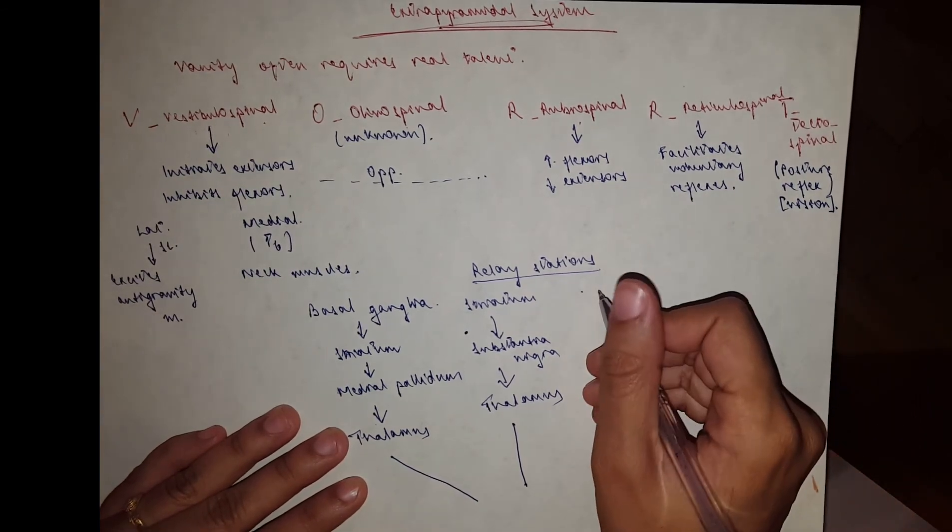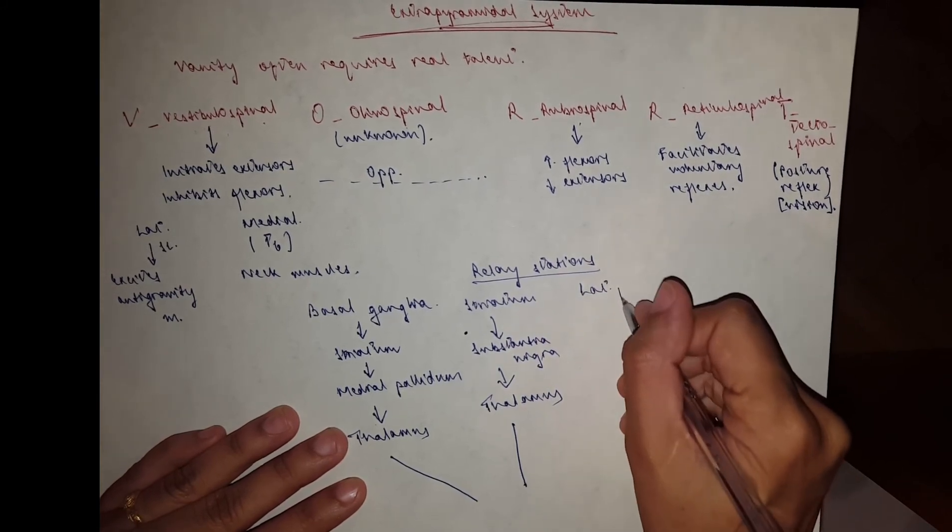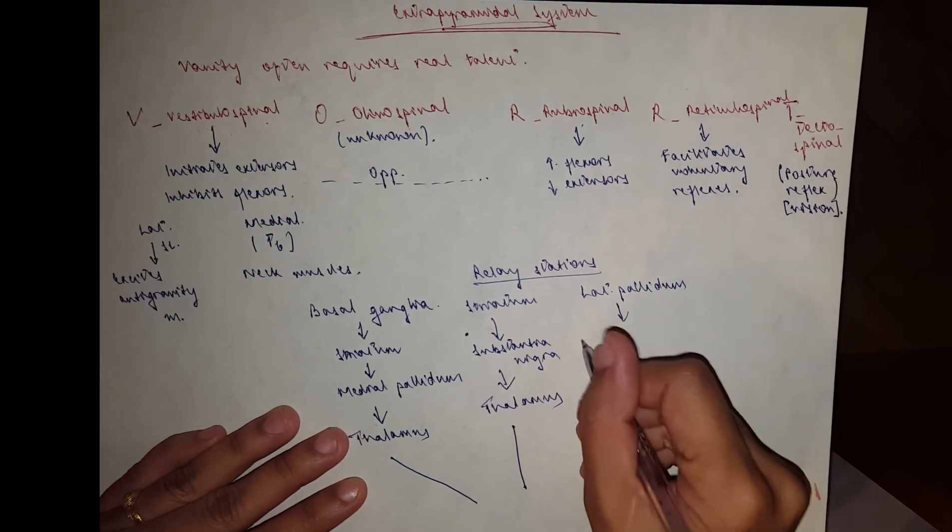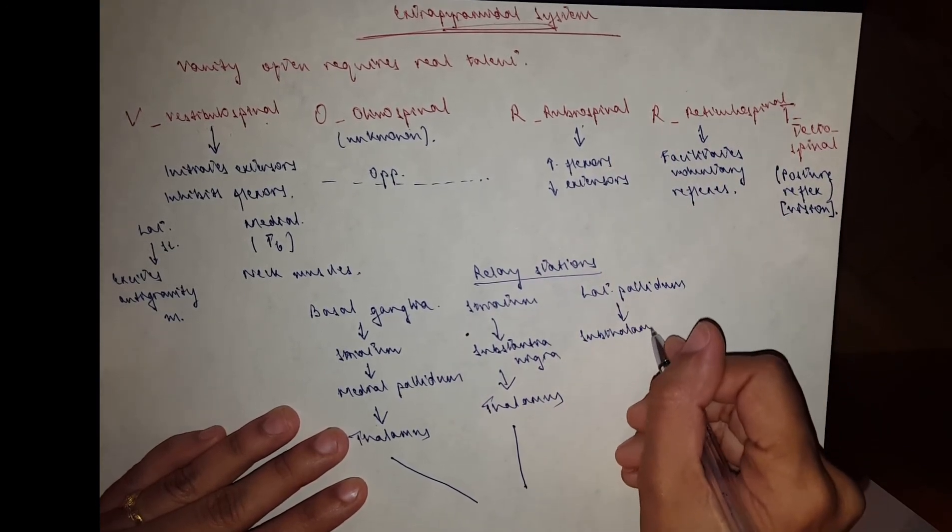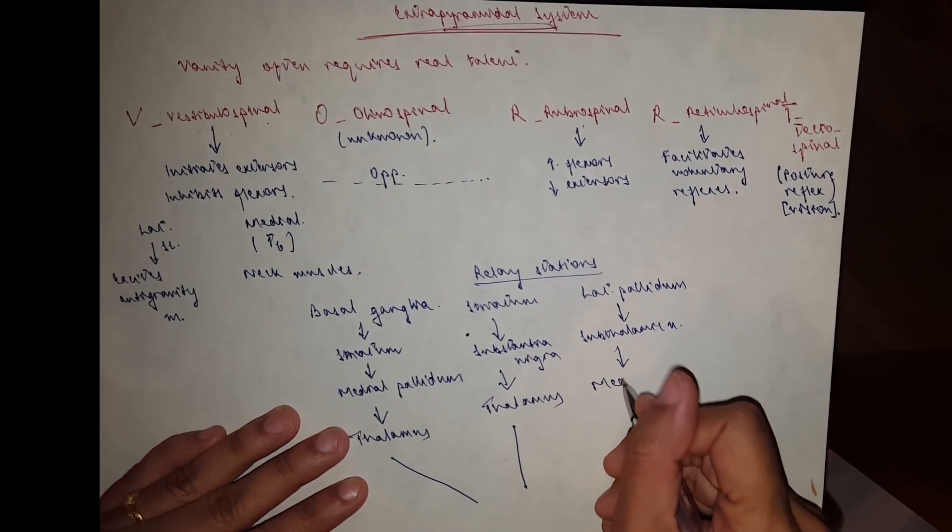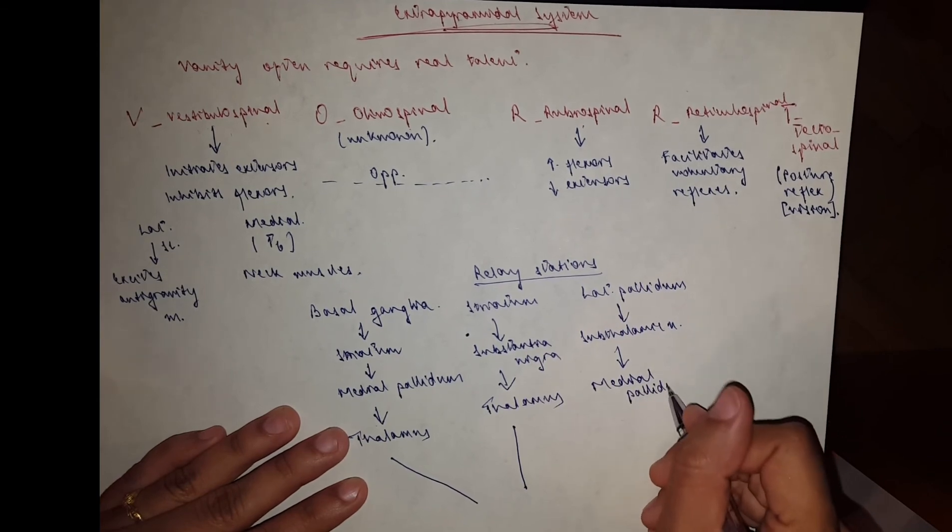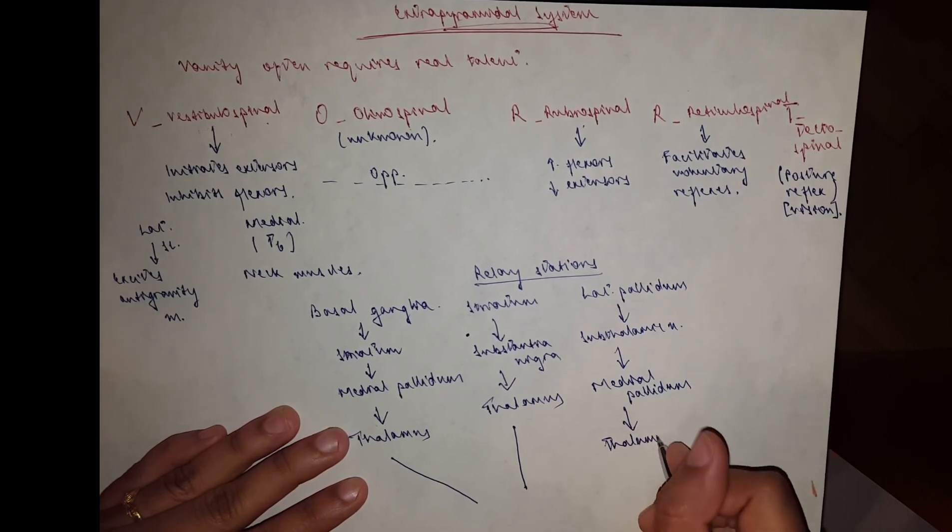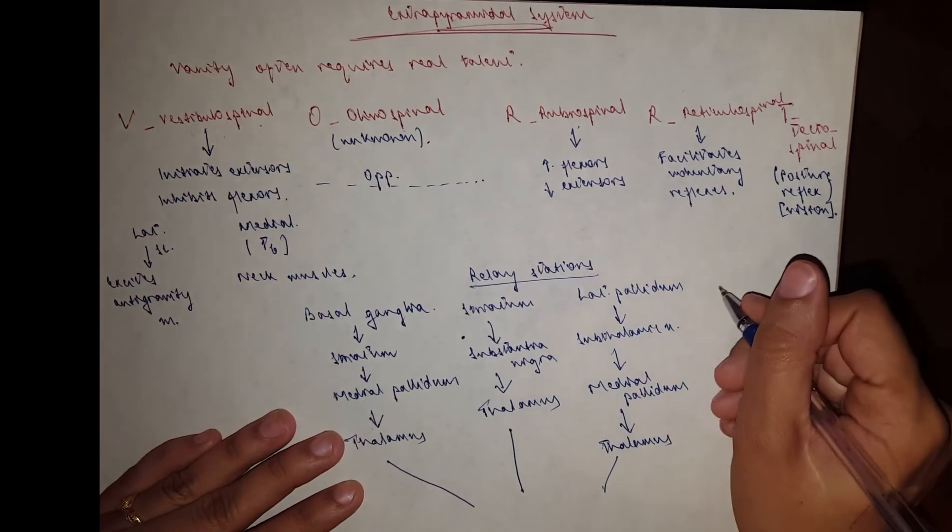The third one would be the subthalamic nucleus, which is in the diencephalon. This one starts from the lateral pallidum, goes to the subthalamic nucleus, onto the medial pallidum, and to the ventral anterior nucleus of the thalamus, which then goes to the motor cortex.